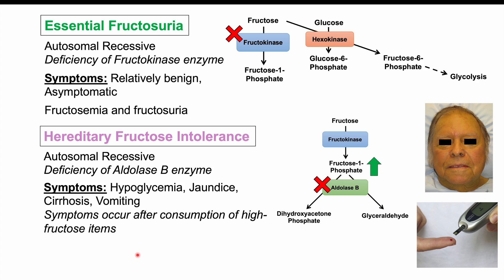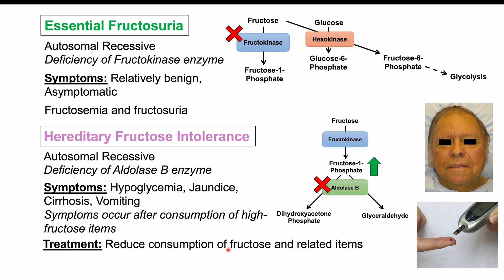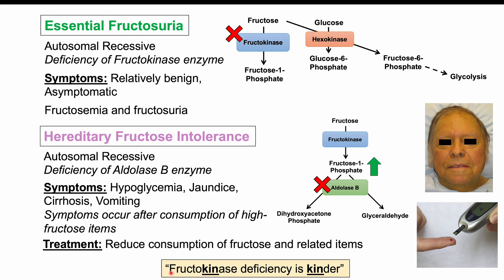Because symptoms of hereditary fructose intolerance occur after consumption of high-fructose items, the treatment is reducing or avoiding fructose and related items altogether. A useful mnemonic to remember which condition is benign: 'fructokinase deficiency is kinder' — the 'kin' in kinase and 'kinder' link together. Fructokinase deficiency (essential fructosuria) is the relatively benign condition because hexokinase can still produce fructose-6-phosphate for use in glycolysis.